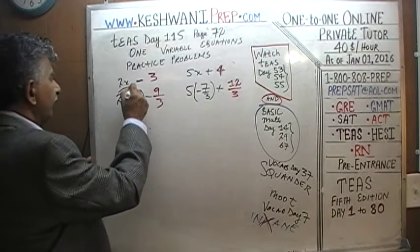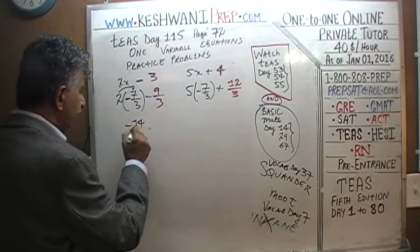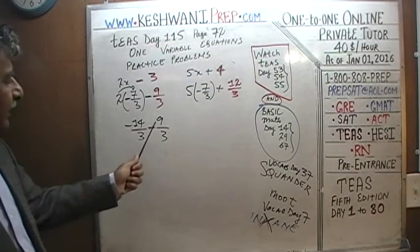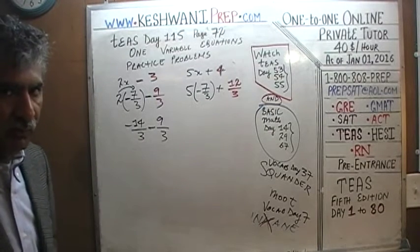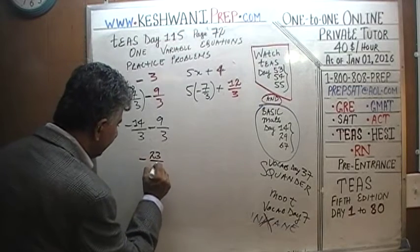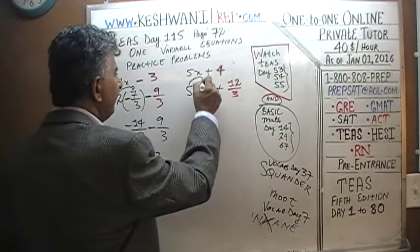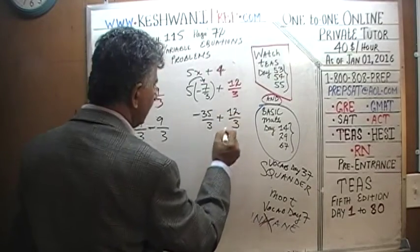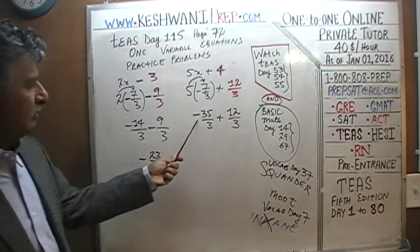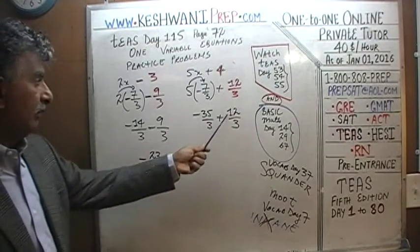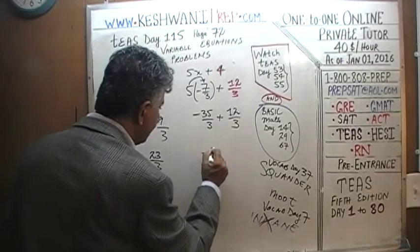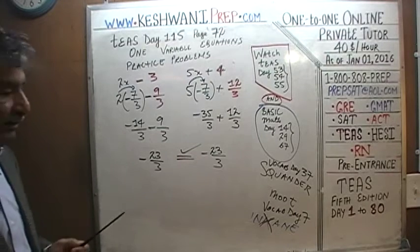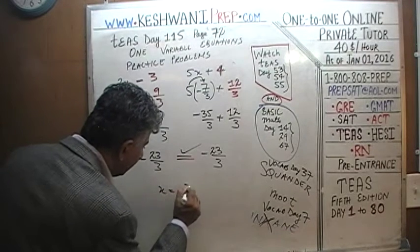On the left side: 2 times negative 7 is negative 14 thirds, plus negative 9 thirds. Negative 14 plus 9 — since 14 plus 10 would be 24, it's 23 — so we get negative 23 thirds. On the right side: 5 times negative 7 is negative 35 thirds, plus positive 12 thirds. Negative 35 and positive 12 gives us negative 23 thirds. Both sides equal negative 23 thirds — it checks out. Our answer was correct: x equals negative 7 thirds.